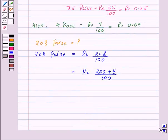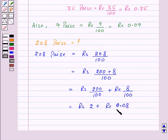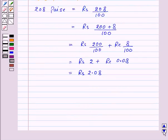Now if we separate 208 in the numerator, we get rupees 200 upon 100 plus rupee 8 upon 100. This will be equal to rupees 2 plus rupee 0.08, as 8 upon 100 is equal to 0.08 in decimals. So this will be equal to rupees 2.08, which can also be written as rupees 2 and 8 paise.